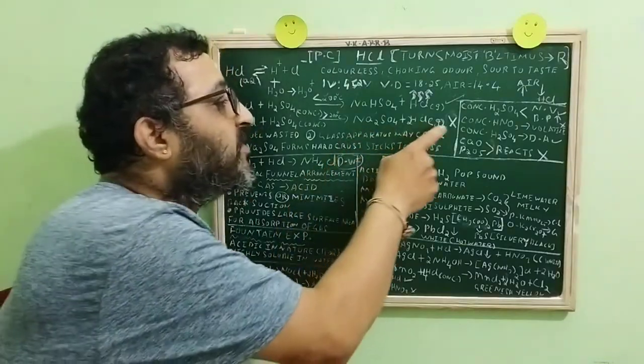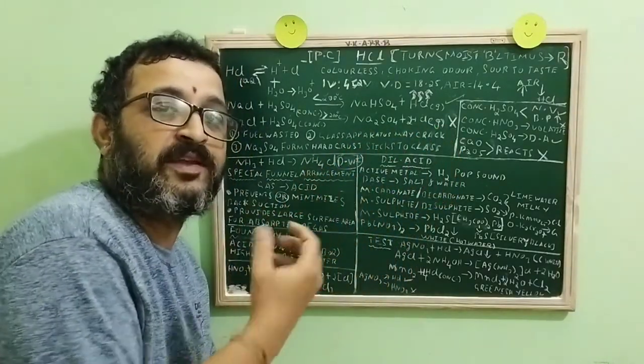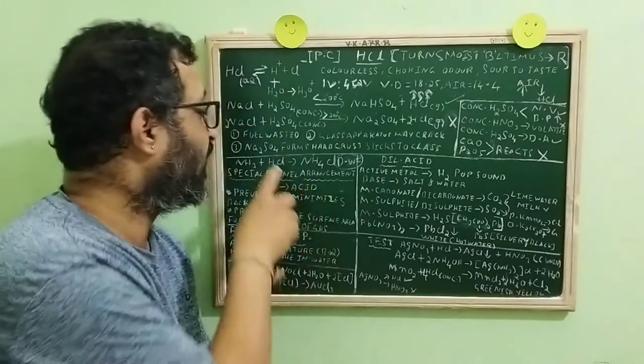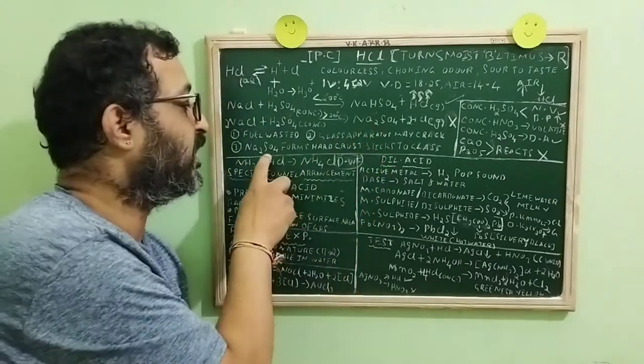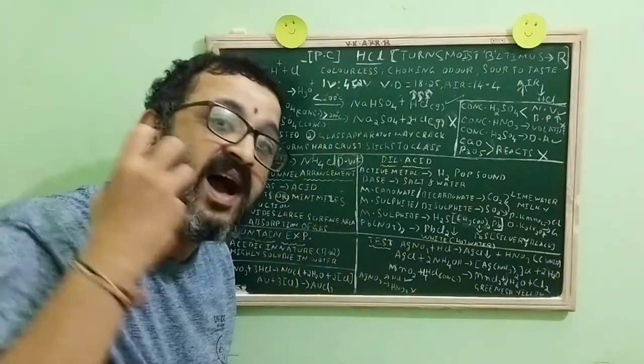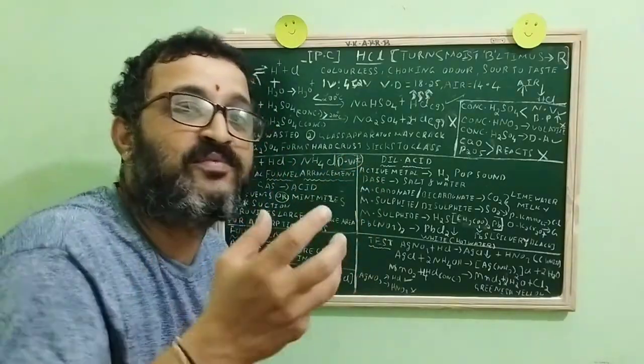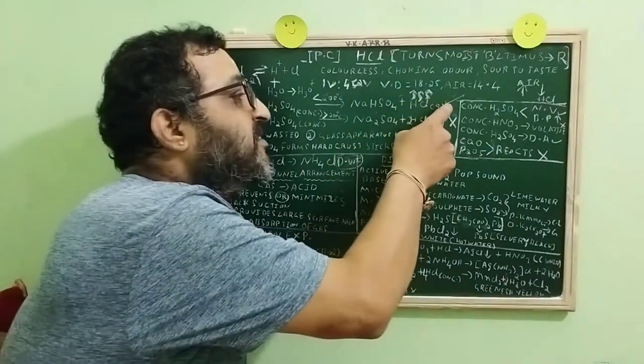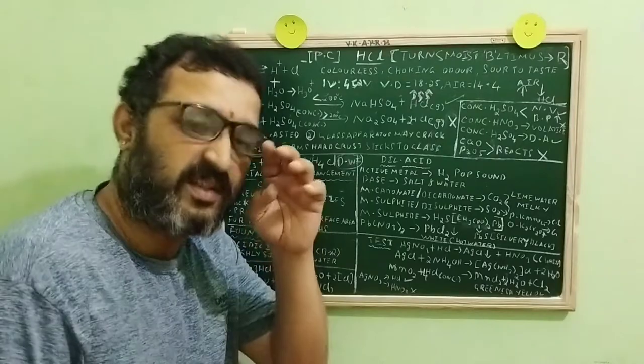Why not the temperature more than 200? When you go at a higher temperature, the fuel is wasted, the apparatus may crack. And in this higher temperature, sodium sulfate is formed, which forms a hard crust and it will stick to the glass and which is very difficult to remove. So this is the preferred reaction, the temperature less than 200.